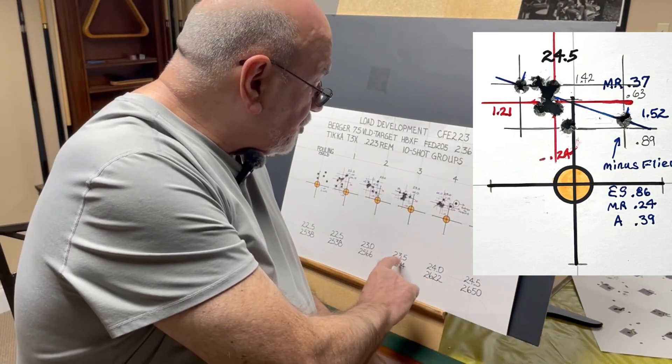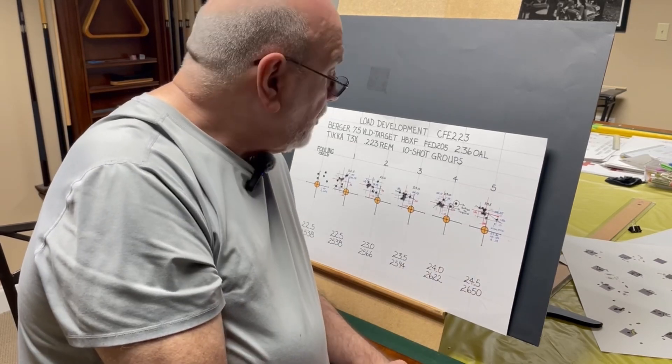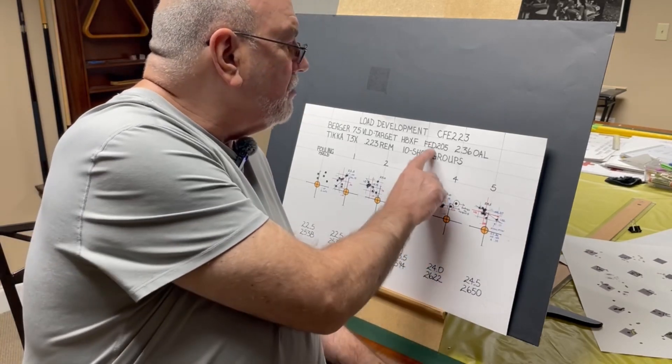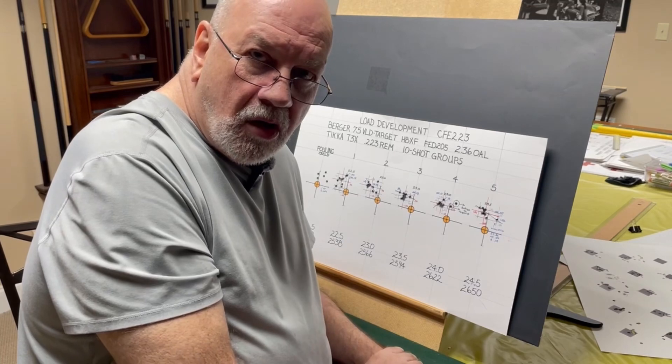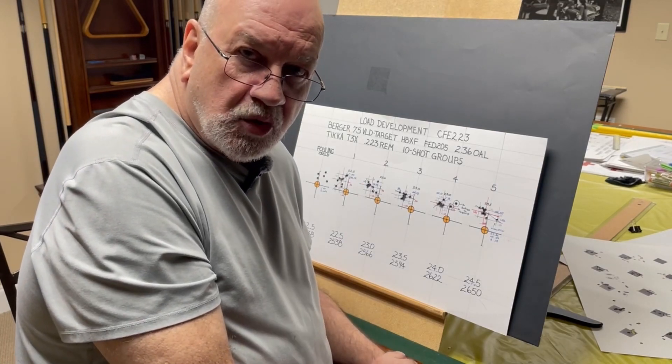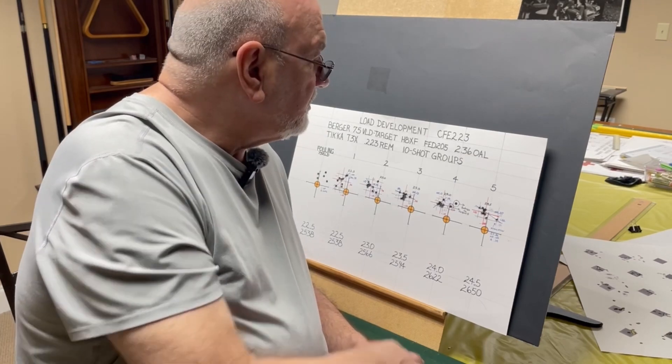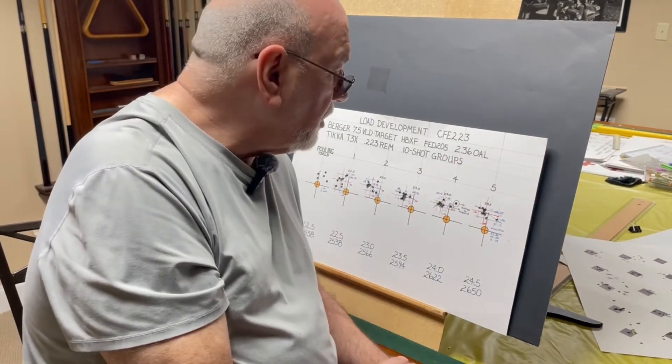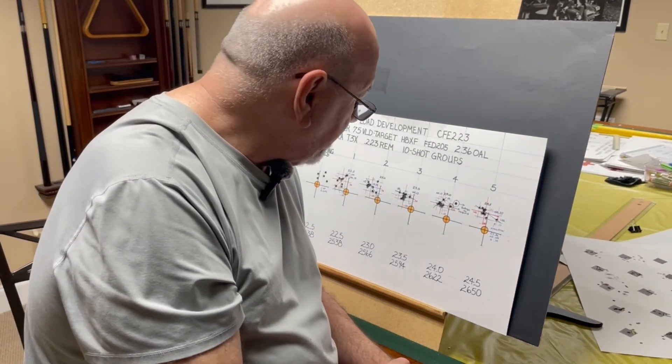I may do a little bit more development around these three charge weights: 23 and a half, 24, 24 and a half. We might even experiment some with the seating depth on these. This is a longer bullet, seated at 2.36 inches overall length. Your standard 223 round is 2.26 inches, but these are 2.36 because it's a longer bullet so it has to be loaded longer and I happen to have a rifle and a magazine that will accommodate that.